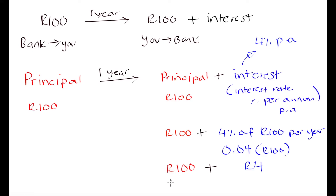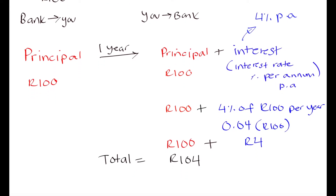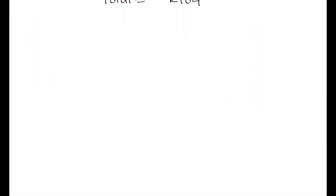In total you are going to pay the bank 104 Rand at the end of that one year. That is what simple interest is — an additional amount of money you pay on top of your principal, calculated as a percentage of the principal, which is the initial amount of money you borrowed.